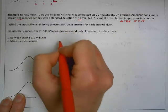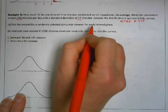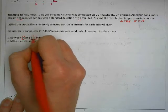Find the probability a randomly selected consumer streams for each interval given. The first interval they give me is between 86 and 115 minutes.